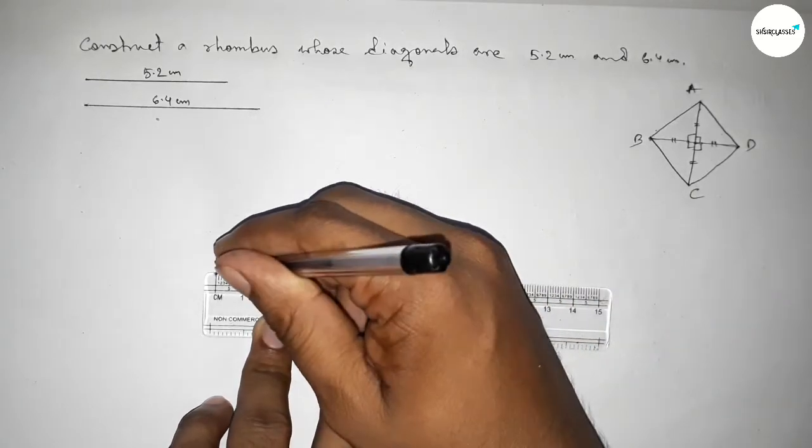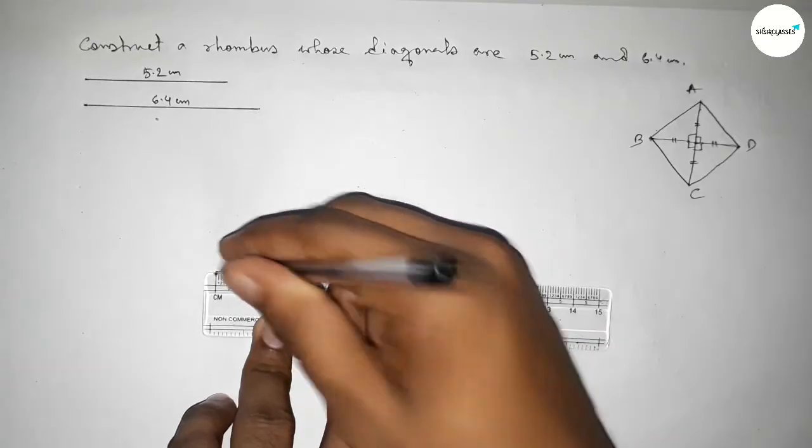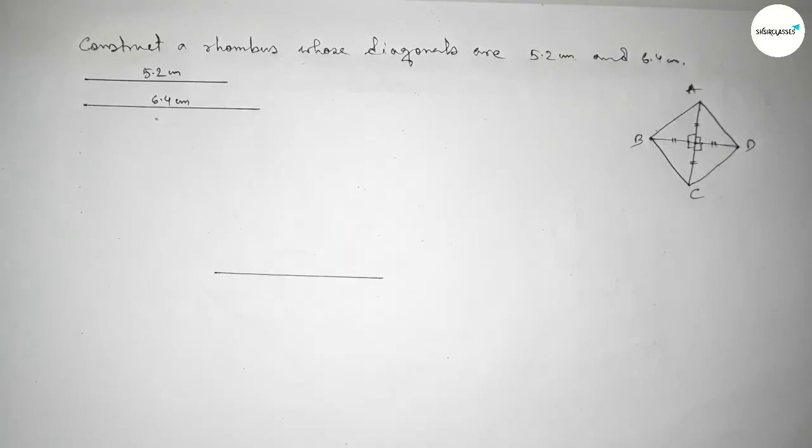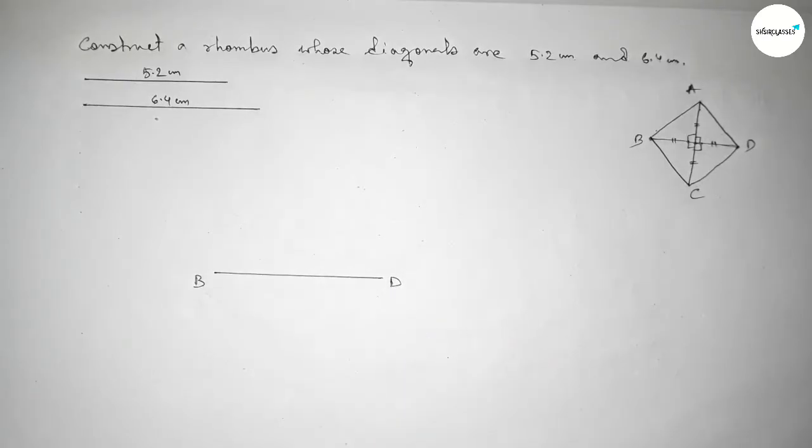Applying this concept here. First we have to draw a diagonal 6.4 centimeters. So this is a 6.4 centimeter line, taking here point B and here D.